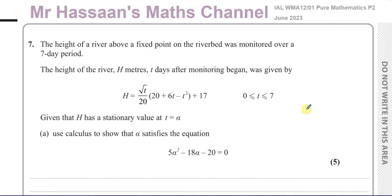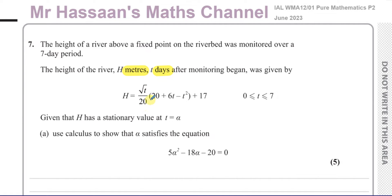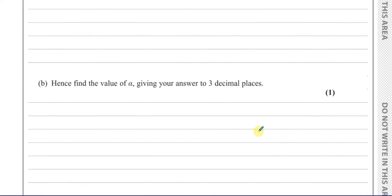We're told about the height of a river above a fixed point on the riverbed, monitored over a 7-day period. The height of the river, H in meters, T days after monitoring began, is given by H equals the square root of T over 20, times the bracket 20 plus 6T minus T squared, close bracket, plus 17, where T is between 0 and 7. We're told that H has a stationary value when T equals alpha, and we've got to use calculus to show that alpha satisfies the following equation.